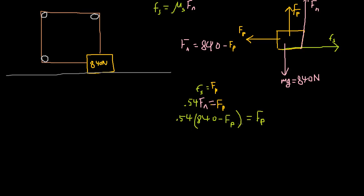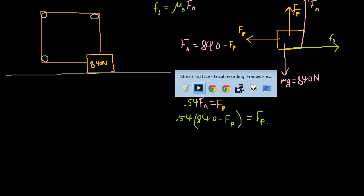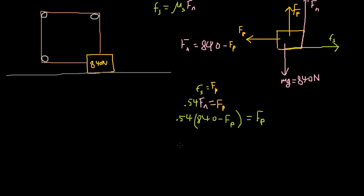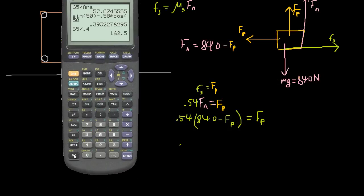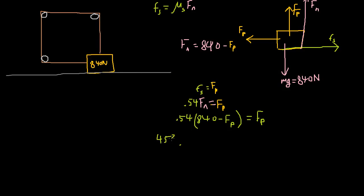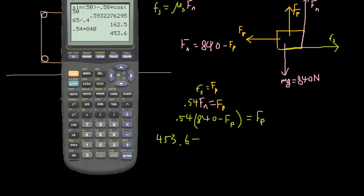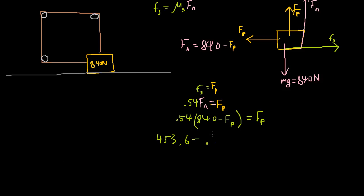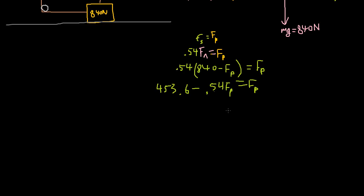We've reduced two variables into one, so now we can solve for the force of pulling. Using the distributive property: 0.54 times 840 is 453.6, so 453.6 minus 0.54 times force of pulling equals force of pulling. Adding 0.54 force of pulling to each side gives us 1.54 times force of pulling equals 453.6.